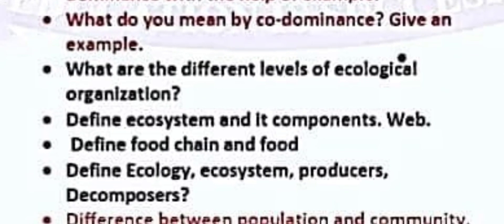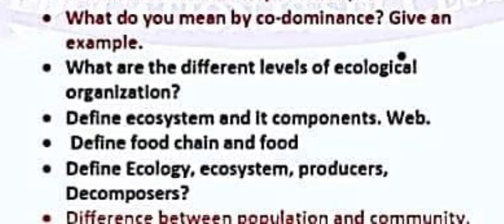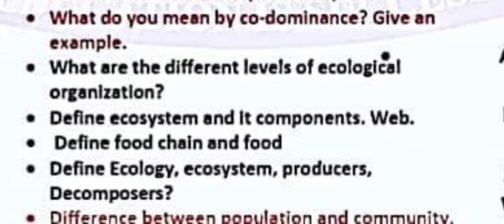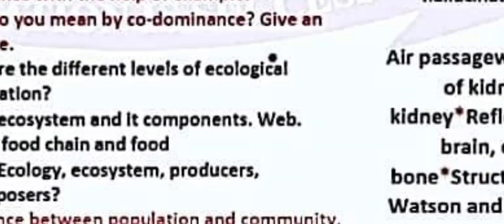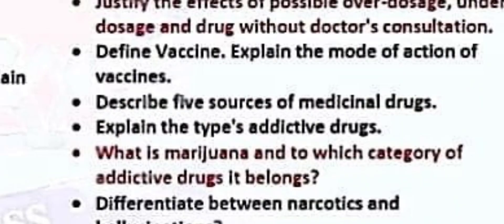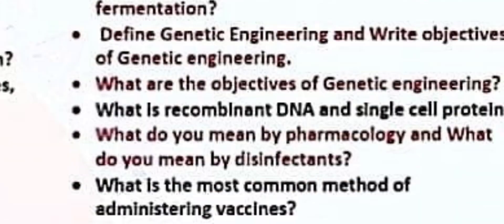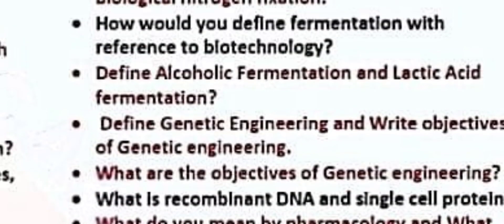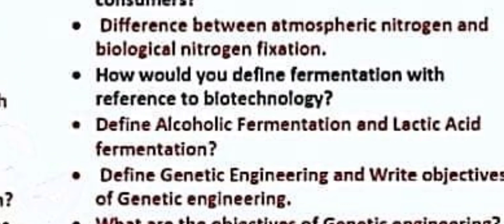What do you mean by co-dominance? Give an example. What are the different levels of ecological organization? Define ecosystem and its components. Define food chain and food web. Define ecology, ecosystem, producers, and decomposers.